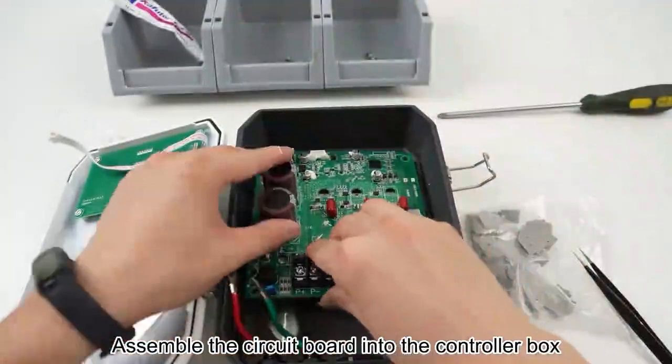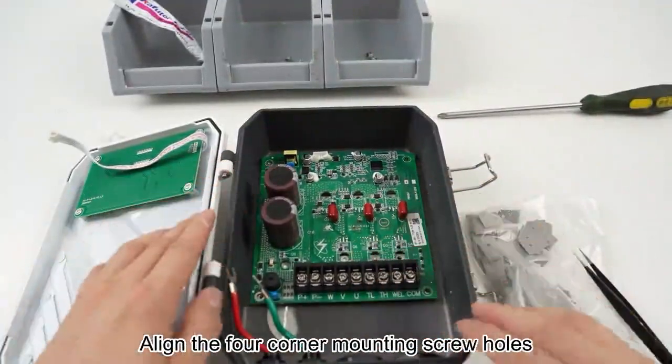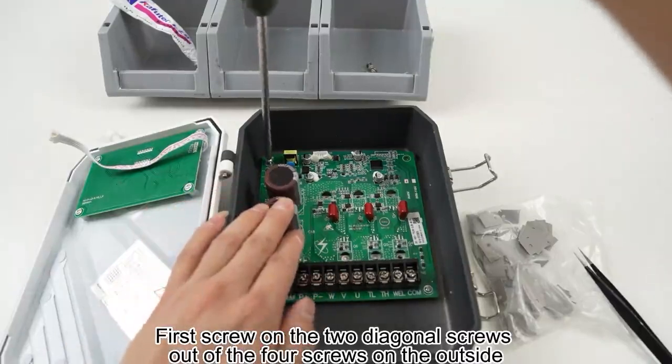Assemble the circuit board into the controller box. Align the four-corner mounting screw holes. First, screw on the two diagonal screws out of the four outside screws.